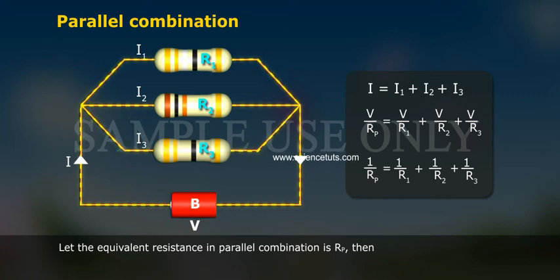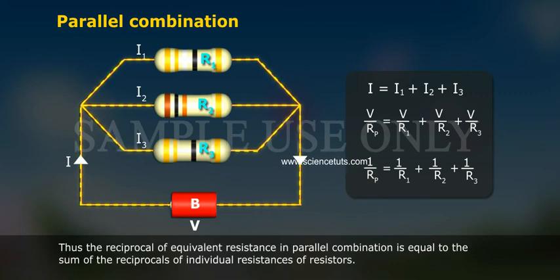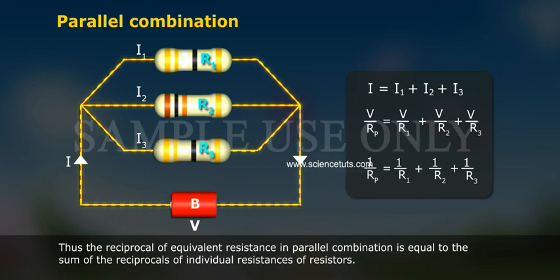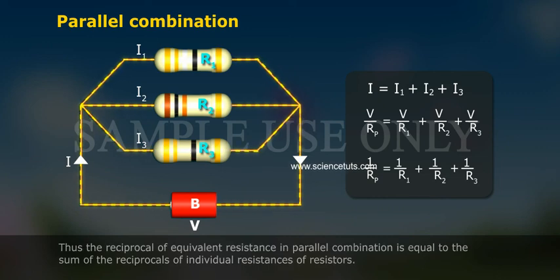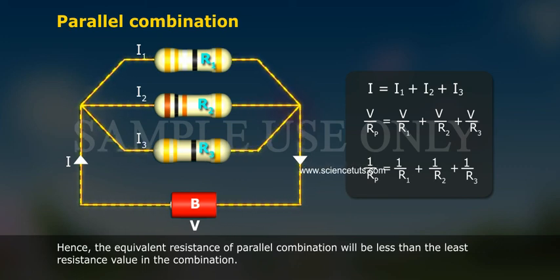Therefore, 1/Rp = 1/R1 + 1/R2 + 1/R3. Thus, the reciprocal of the equivalent resistance in parallel combination is equal to the sum of the reciprocals of the individual resistances of the resistors. Hence, the equivalent resistance of the parallel combination will be less than the least resistance value in the combination.